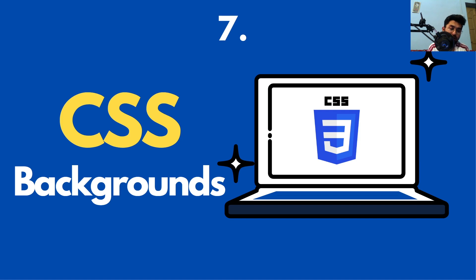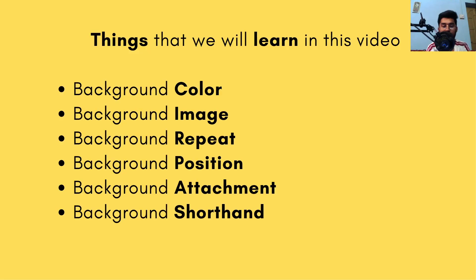Hello everybody, this is Fadali and this video is about backgrounds in CSS. We're going to learn about the different background properties — background color, background image, background repeat, background position, background attachment, and shorthand. Let's go to VS Code and see how we can use these things.